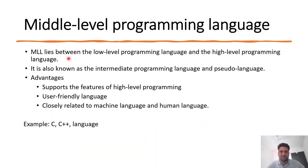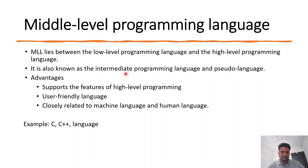Coming to middle-level programming languages — as already discussed, they lie between low-level and high-level programming languages. They are also known as intermediate programming languages or pseudo-languages. They support features of both high-level and low-level languages, which is why C and C++ are still very famous. They are user-friendly and close to both machine language and human language.